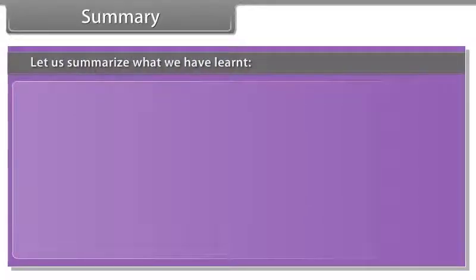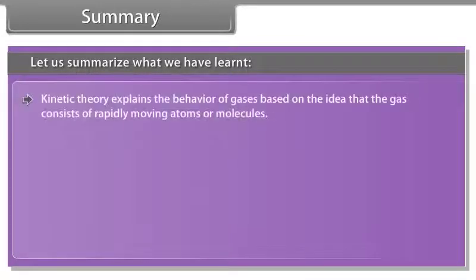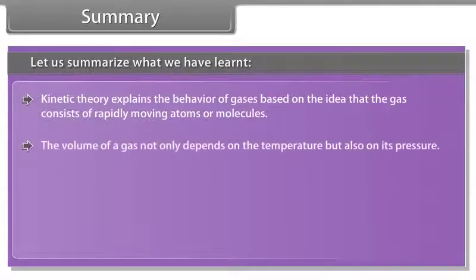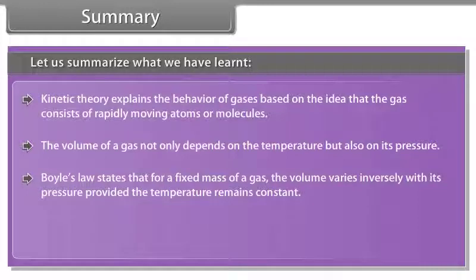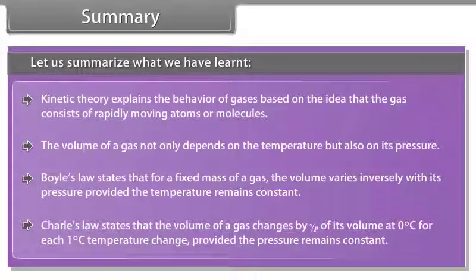Summary: Let us summarize what we have learned. Kinetic theory explains the behavior of gases based on the idea that the gas consists of rapidly moving atoms and molecules. The volume of a gas not only depends on the temperature but also on its pressure. Boyle's law states that for a fixed mass of a gas, the volume varies inversely with its pressure provided the temperature remains constant. Charles law states that the volume of a gas changes by gamma P of its volume at zero degrees centigrade for each one degree centigrade temperature change, provided the pressure remains constant.